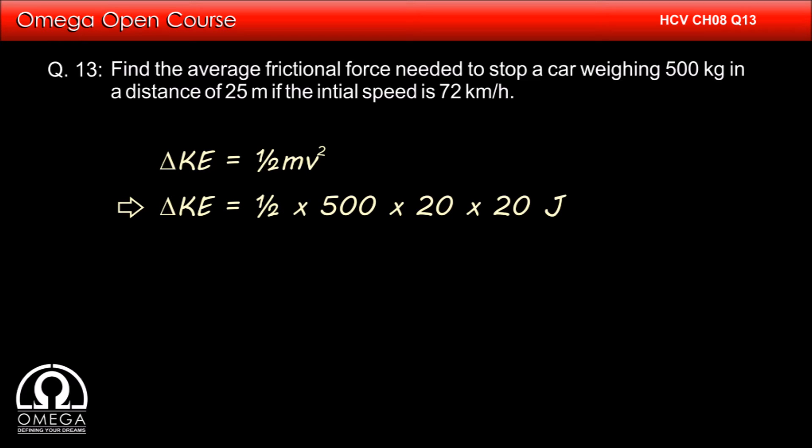The speed of the car is 72 km per hour, which when converted to meters per second turns out to be 20 meters per second. So the change in kinetic energy of the car is half into 500 into 20 into 20 joules.